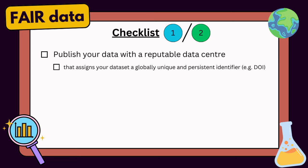This is one place where there can be big differences between good and less good data centers. According to this principle there should be rich metadata — meaning you should be thorough with the metadata you're providing. Some data centers are popular because they make publishing data quick and easy, and whilst that convenience is great, it shouldn't come at the expense of rich metadata requirements. So let's add another criterion to our checklist: publish your data with a data center that has comprehensive discovery metadata requirements. The more detailed your metadata, the easier it is for someone to find and use your data effectively.